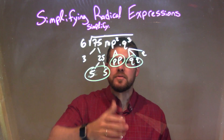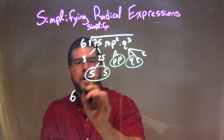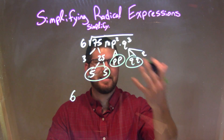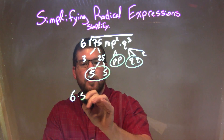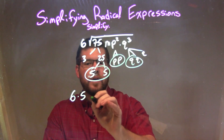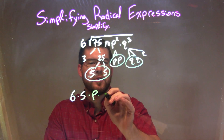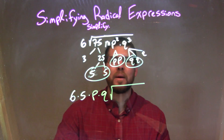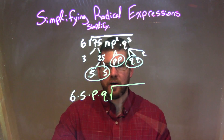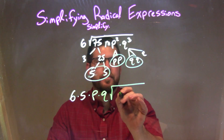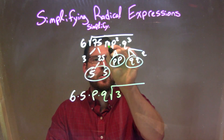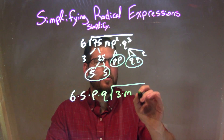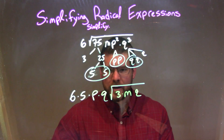So what I'm going to do is rewrite this — this 6 on the outside — and multiply all of my pairs as single elements on the outside. So I have 5 right there, then we have p, then we have q. And then inside the square root is all my single values. My single values were just the 3. Don't forget that m that was up there: 3 times m times a q, being a lone ranger.